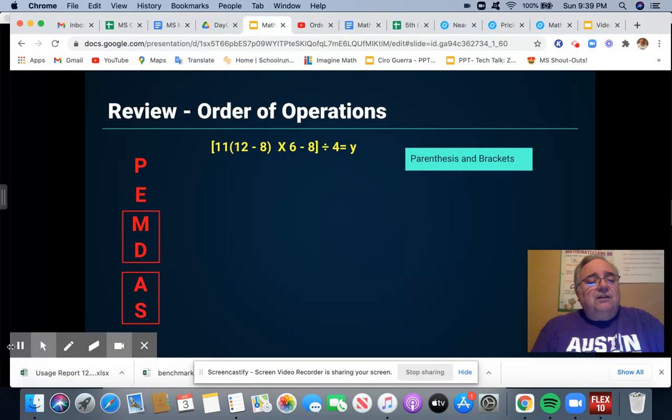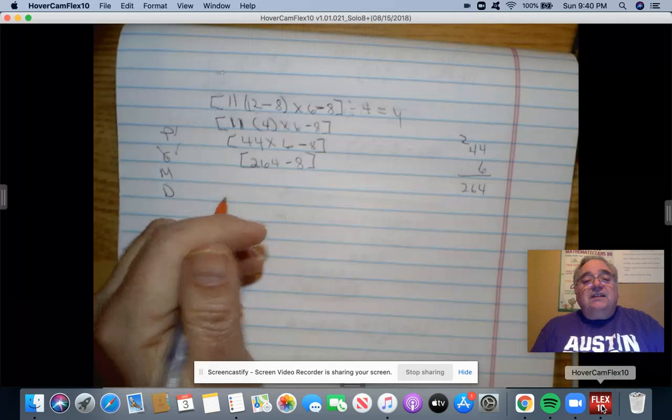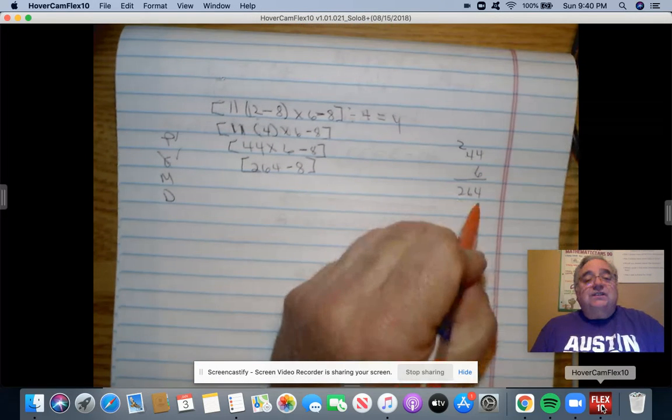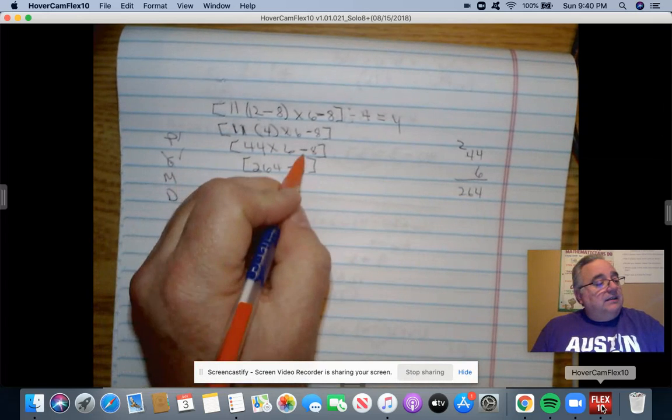Let me go ahead and have you give me the answer to that. Teachers, please pause the video. Have the students give you the answer to 44 times 6. Excellent, excellent, excellent. Yes. 44 times 6 equals 264. So it's 264. I've still got the brackets. Minus 8.